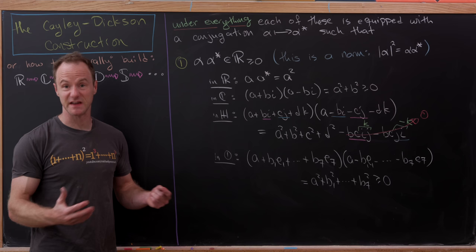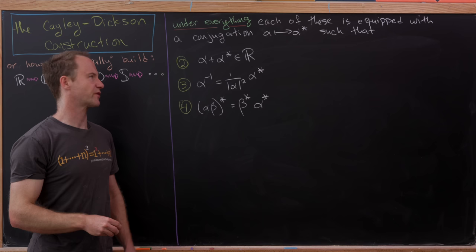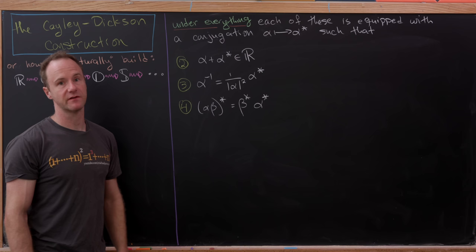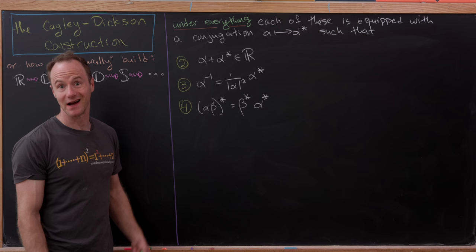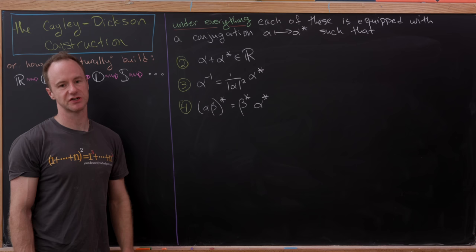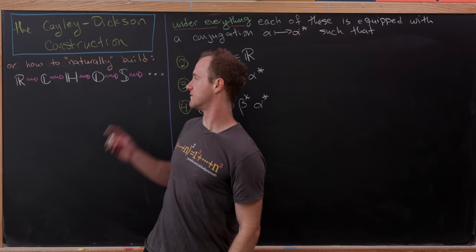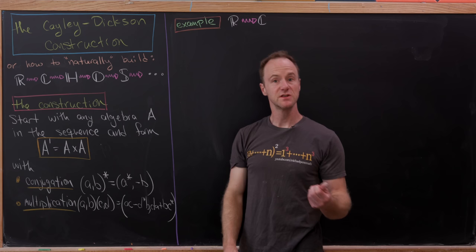Let's look at some other properties satisfied by this conjugation before we look carefully at the construction. There are three more properties: if you add something to its conjugate, you get a real number; the multiplicative inverse of any element is given by one over its norm-squared times its conjugate; and if you take the conjugate of alpha times beta, you get the conjugate of beta times the conjugate of alpha — so it switches the order. Now that we have an idea of some properties that tie all of these together, let's look at the construction device.